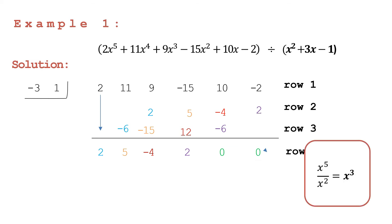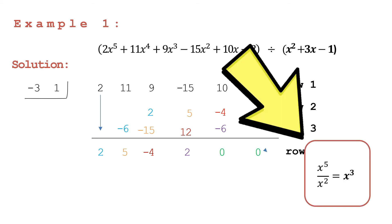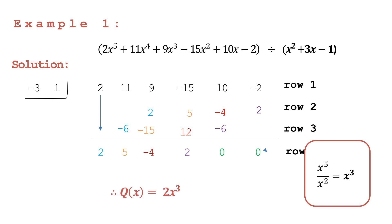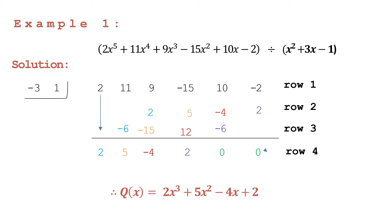Let's write our quotient. Take note that you have to divide the leading literal coefficient of your dividend by the leading literal coefficient of your divisor: x raised to the 5th divided by x squared equals x cubed. So we begin with x cubed together with the numerical coefficients: 2x cubed plus 5x squared minus 4x plus 2. That's the final answer.